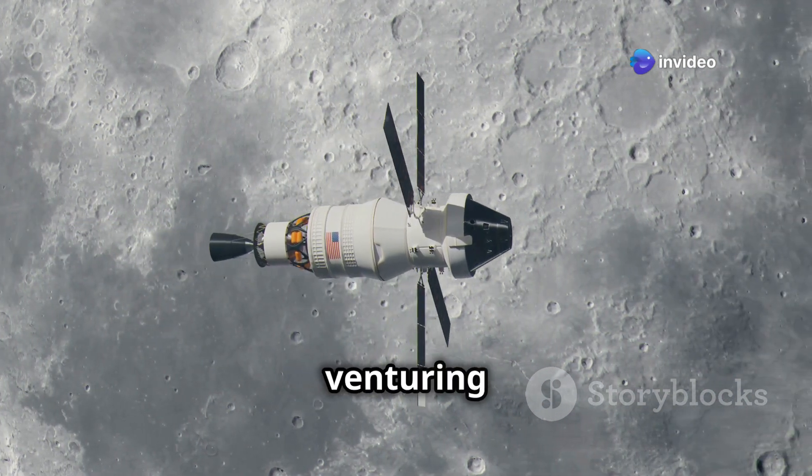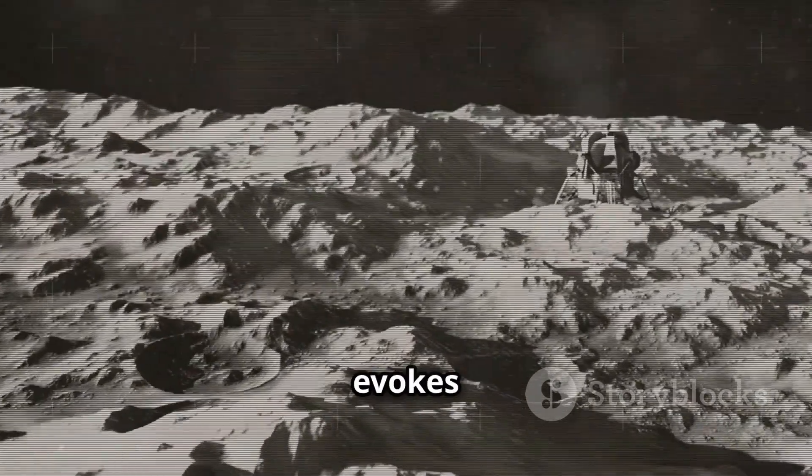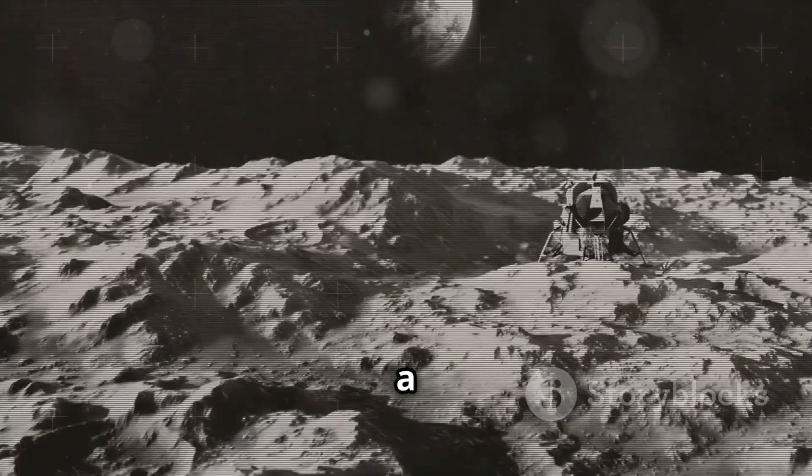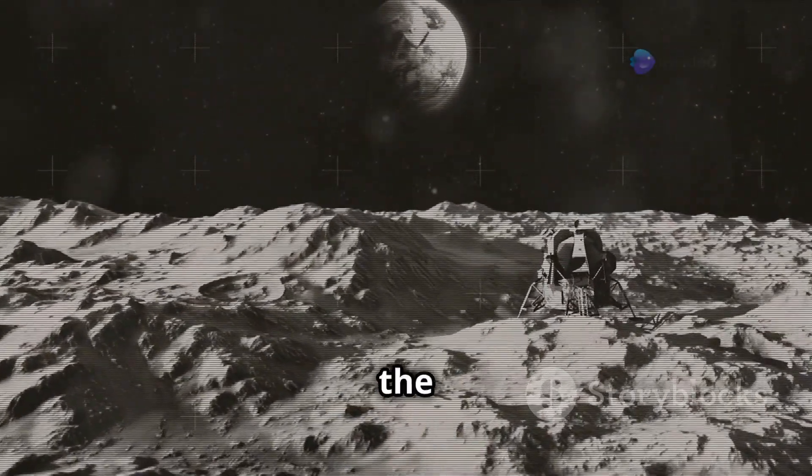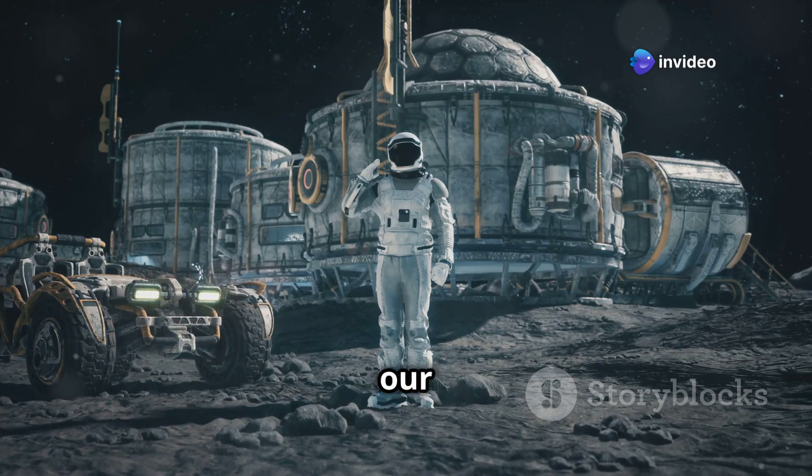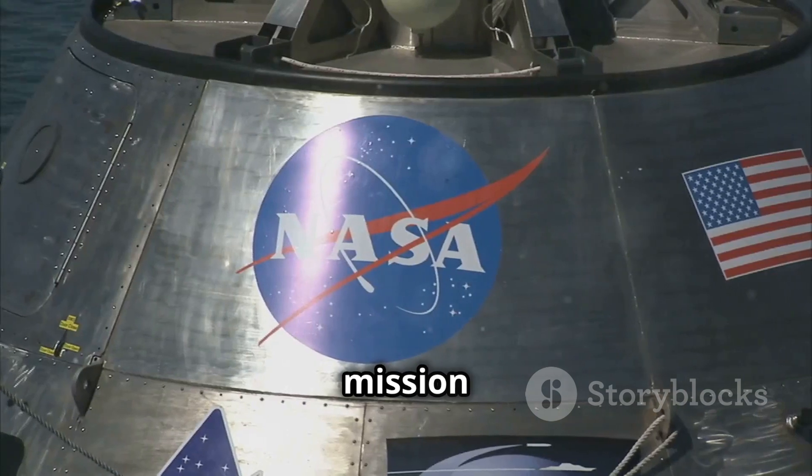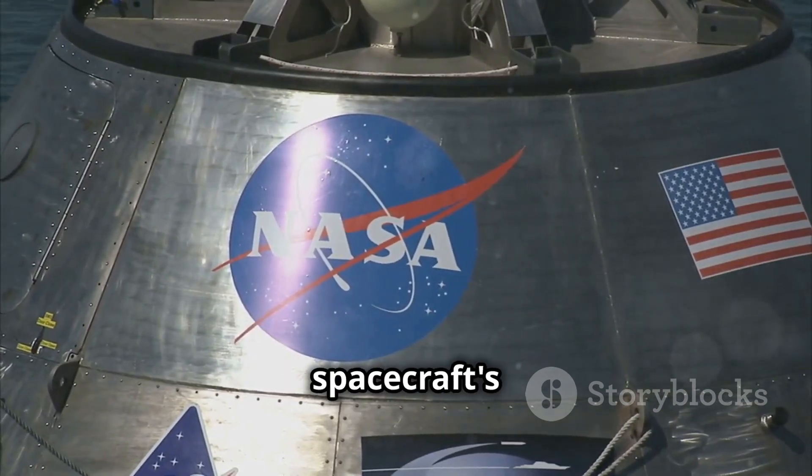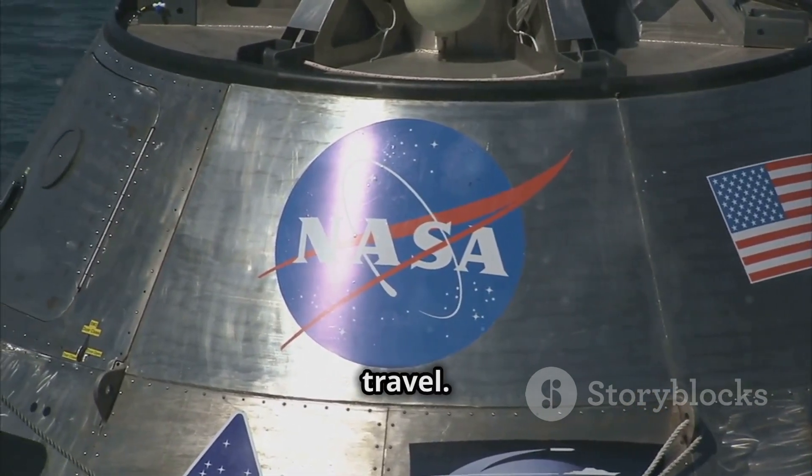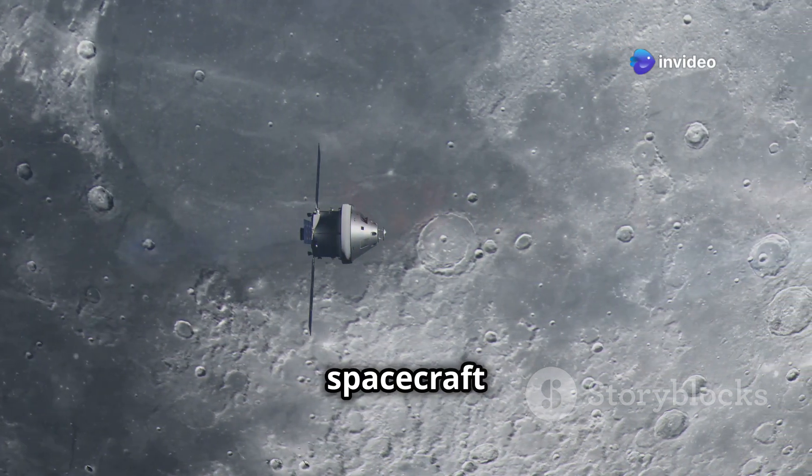Imagine four humans strapped into the Orion spacecraft, venturing beyond Earth's gravitational grip, tracing a path that evokes memories of the Apollo era when humanity first reached for the stars. But Artemis 2 is more than just a nostalgic trip. It's a critical step in our journey to establish a sustained presence on the moon. This mission is about testing the Orion spacecraft's capabilities for deep space travel, like a rigorous test drive pushing the spacecraft to its limits.